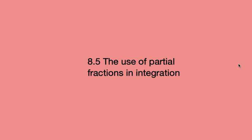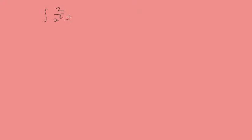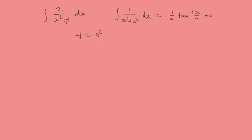Today we're going to be looking at the use of partial fractions in integration. Let's consider this integral: 2 over x squared minus 1 dx. This looks very much like integrals of the form 1 over x squared plus a squared dx, which equals 1 over a times tan inverse of x over a plus c. But we have a problem here — we've got minus 1 as our a squared, and we can't have minus 1 equal to a squared, since minus 1 times minus 1 is positive 1. So we need a new way of doing this.